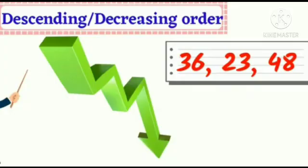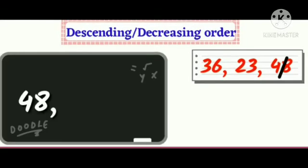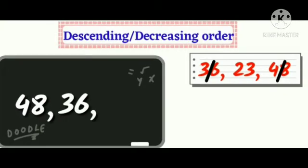Now let us see how to put the numbers 36, 23, and 48 in descending or decreasing order. Observe the numbers 36, 23, and 48, and find out the greatest number. Yes, it is 48. Cross it out and write it on the slate. Now choose the bigger number from the two remaining numbers — yes, it is 36. Cross it out and write it after 48.